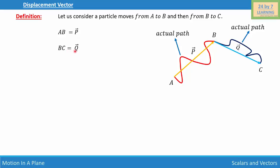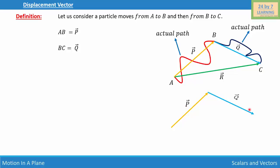A-B is vector p and B-C is vector q — these represent the change in position of the particle. Since A is the starting point and C is the final point, to find the total displacement we connect A with C, giving us vector r. This forms a triangle: one side is vector p, another side is vector q, and the third side is vector r.